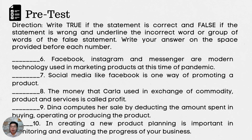6. Facebook, Instagram, and Messenger are modern technologies used in marketing products at this time of pandemic. 7. Social media like Facebook is one way of promoting a product. 8. The money that Carla used in exchange of commodity, product, and services is called profit. 9. Dina computes her sale by deducting the amount spent in buying, operating, or producing the product. 10. In creating a new product, planning is important in monitoring and evaluating the progress of your business.